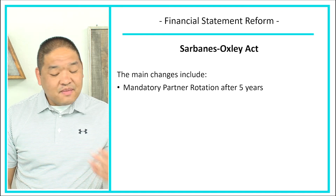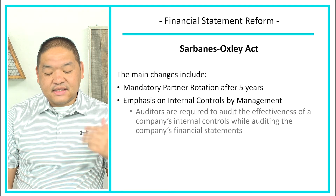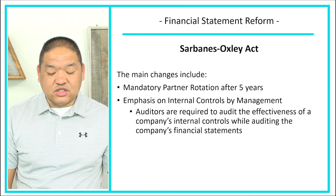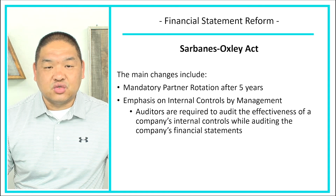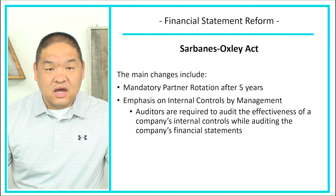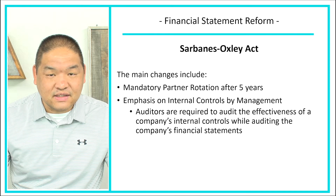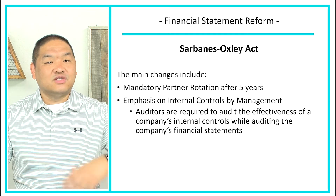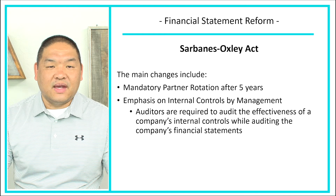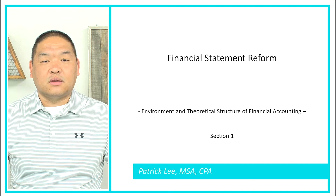The other main change from Sarbanes-Oxley is the emphasis on internal controls by management. Auditors are now required to audit the effectiveness of a company's internal controls while auditing the company's financial statements. Because management is responsible for internal controls, auditors now spend time auditing the effectiveness of those controls to ensure they are working effectively. So instead of just auditing financial statements, we are also reviewing and auditing internal controls — that is the big thing about financial statement reform.